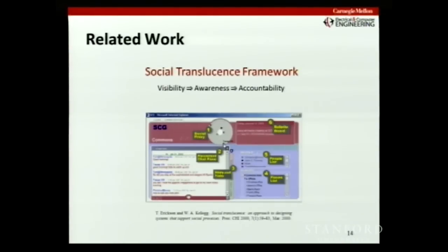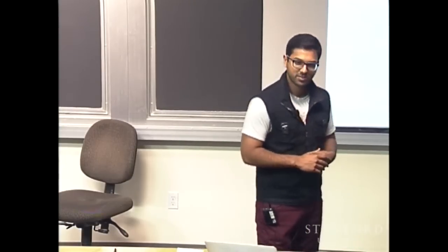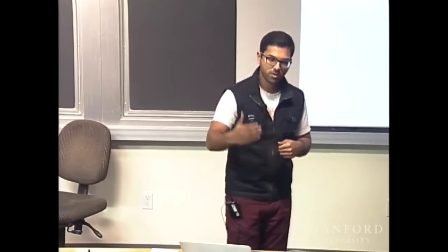One popular related interface is the Loops Babel interface from IBM. They came up with a social translucent framework, saying that if you increase visibility, you give rise to awareness, which in turn gives rise to accountability. They explain it with a story about a door that opens from a hallway into a stairway: if you open the door fast, you're likely to hit someone coming the other way. Putting a sign on the door that says 'please open carefully' doesn't work that well. A better solution is to put a glass window in the door, creating visibility, awareness, and accountability.